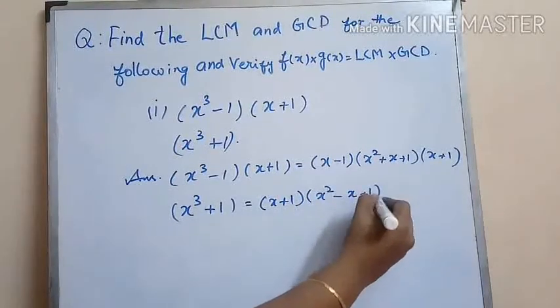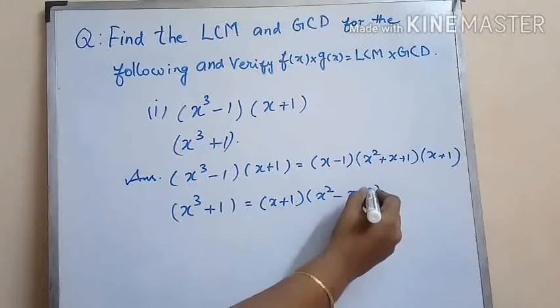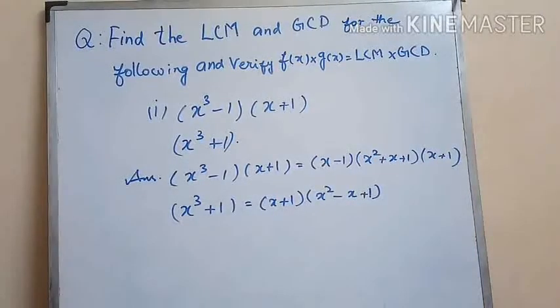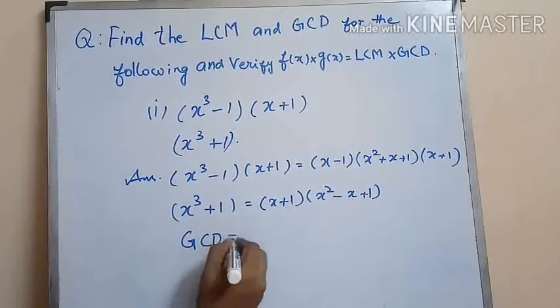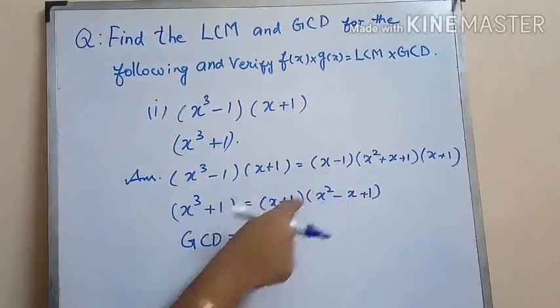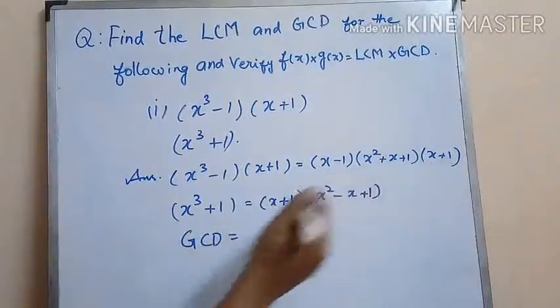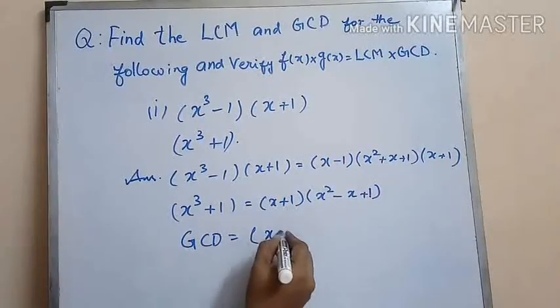Now let us write the GCD and LCM of these two polynomials. GCD is the common factor x plus 1.